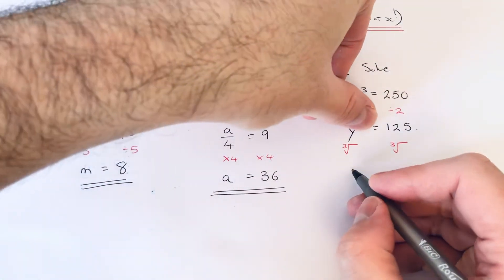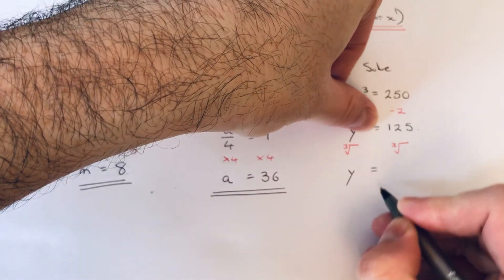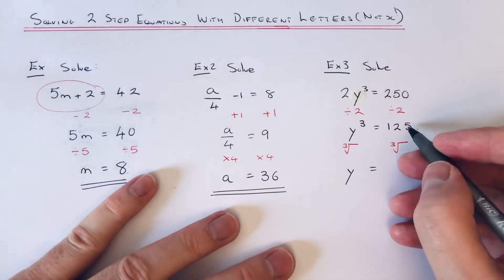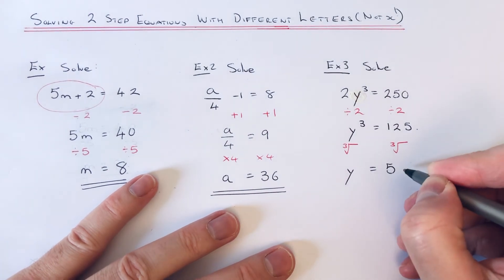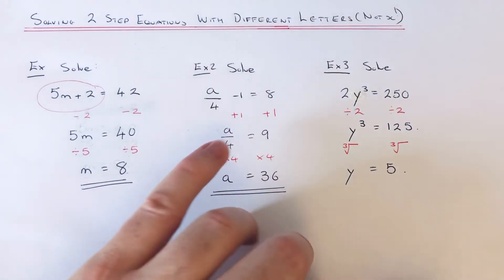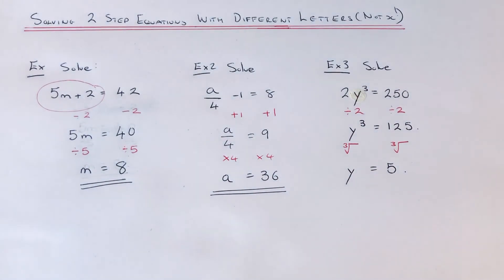So this will get rid of the power 3 and leave you with y. If you don't know the cube root of 125, you could use your calculator. And the answer to that is 5 because 5 times 5 times 5 is 125.